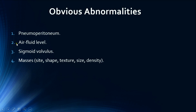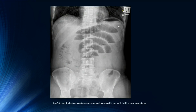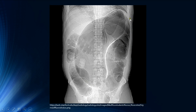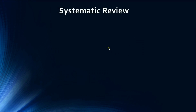Next, look for obvious abnormalities such as pneumoperitoneum, air-fluid levels, sigmoid volvulus, or masses. However, findings on abdominal radiographs are usually subtle, so systematic review is essential. Here is an erect AP radiograph showing dilated small bowel with valvulae conniventes and multiple air-fluid levels indicating small bowel obstruction. Here is an example of sigmoid volvulus showing the classic coffee bean sign.